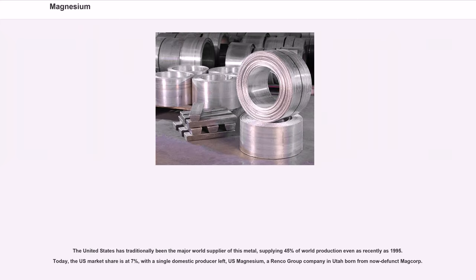The United States has traditionally been the major world supplier of this metal, supplying 45% of world production even as recently as 1995. Today, the U.S. market share is at 7%, with a single domestic producer left — U.S. Magnesium, a Renko Group company in Utah born from the now-defunct Magcorp.